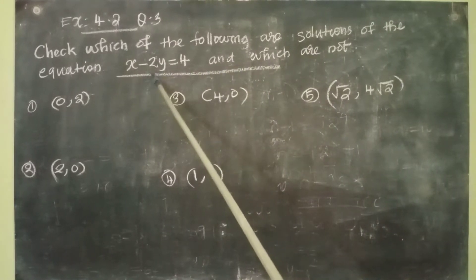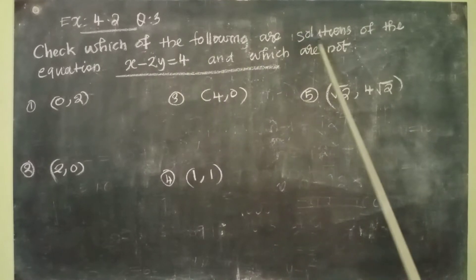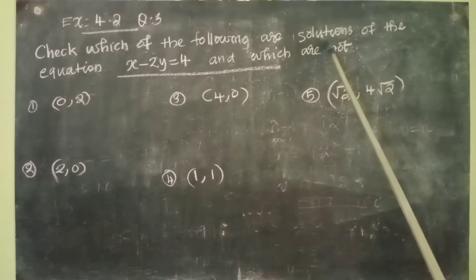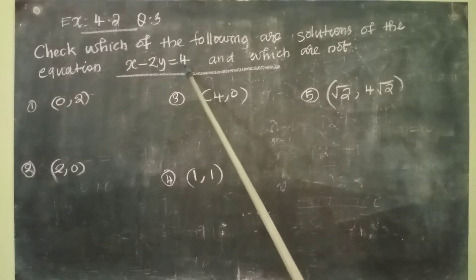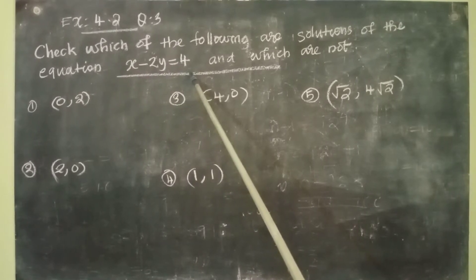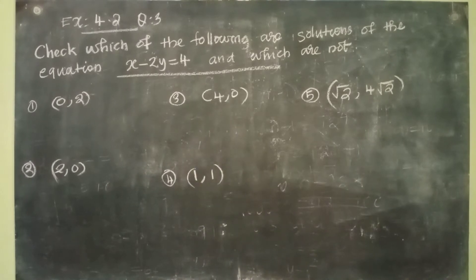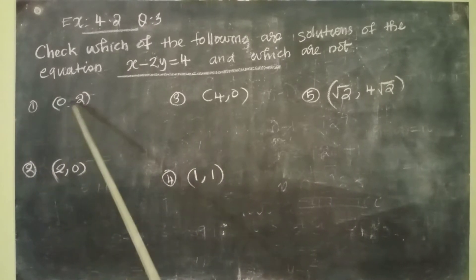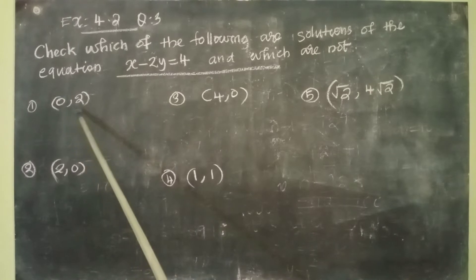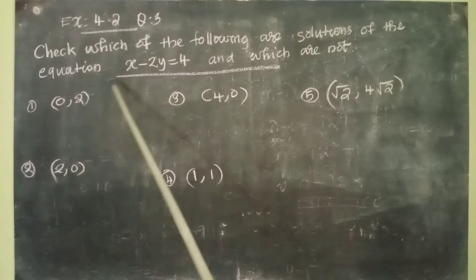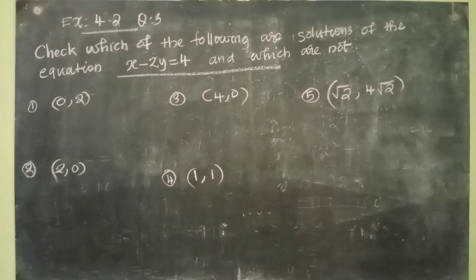Here the equation is x minus 2y equal to 4. We have to check which of the following are solutions. A solution means values of x and y which satisfy this equation. So here 5 pairs are given, let us check them. The first pair is (0, 2), meaning the value of x is 0 and the value of y is 2. We can substitute x equal to 0 and y equal to 2 in this equation.